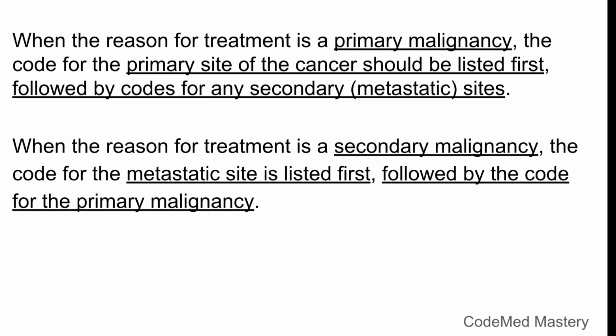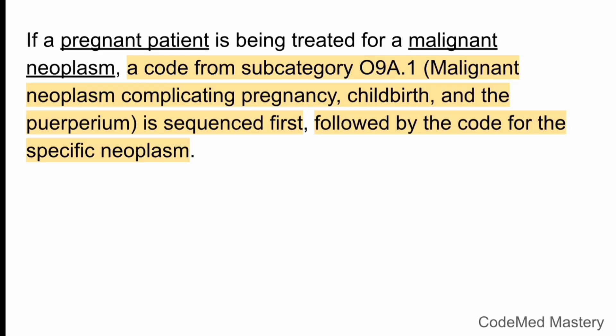Next, if a pregnant patient is being treated for a malignant neoplasm, we have to code from subcategory O9A.1 — that is, malignant neoplasm complicating pregnancy, childbirth, and the puerperium. This code will be sequenced first. Remember: if a pregnant patient is being treated for a neoplasm, the O code will be sequenced first, followed by the code for the specific neoplasm.